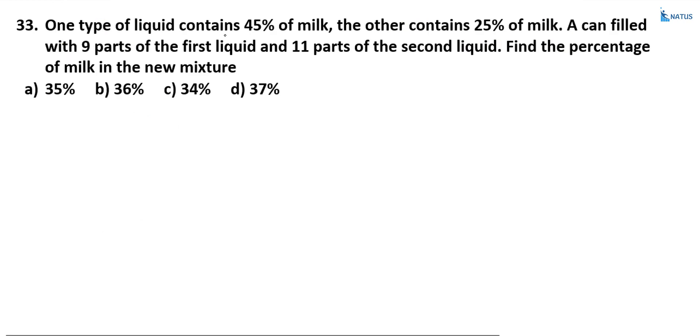One type of liquid contains 45% milk and the other contains 25% milk. A can is filled with 9 parts of the first liquid and 11 parts of the second liquid. Find the percentage of milk in the new mixture.